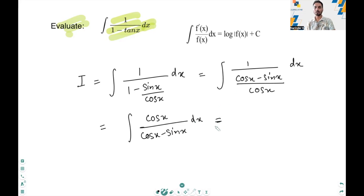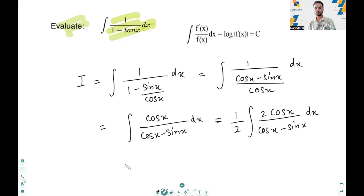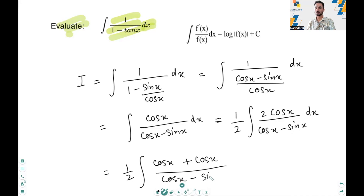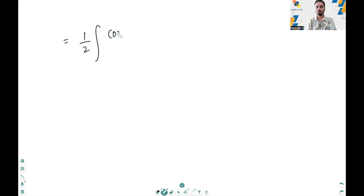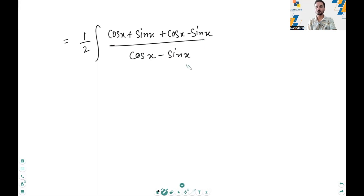Now, in order to simplify it further, what we are going to do is multiply and divide the numerator by 2, and then write 2 cos x in the denominator as cos x plus cos x divided by cos x minus sin x. And now, in the denominator we have sin x but in the numerator we only have cos x, so we will introduce sin x in the numerator as well. Introducing sin x in the numerator, the integral becomes cos x plus sin x plus cos x minus sin x divided by cos x minus sin x.